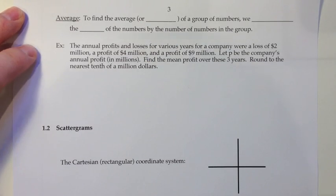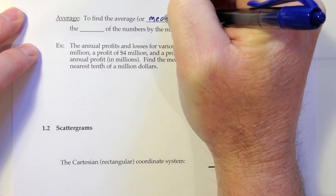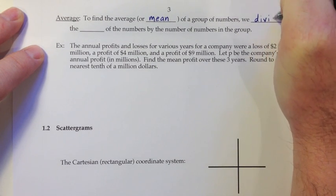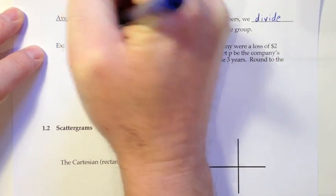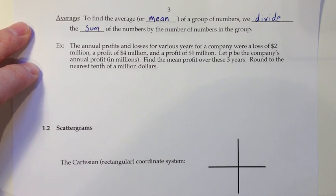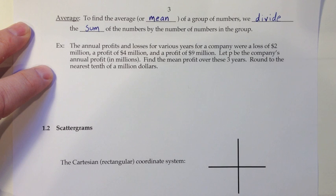Okay, moving on to page three. We're going to define the average. To find the average or mean, so the first thing to say there is another word for the average is the word mean. In fact, in a math class or statistics class, we would say it's more proper to use the word mean than average. So to find the average or mean of a group of numbers, we divide the sum of the numbers by the number of numbers in the group. Or in other words, we add up all the numbers and then divide by how many numbers we had. Let's look at a quick example. The annual profits and losses for various years for a company were a loss of $2 million, a profit of $4 million, and a profit of $9 million. Let P be the company's annual profit in millions, find the mean profit over these three years, and round to the nearest tenth of $1 million.